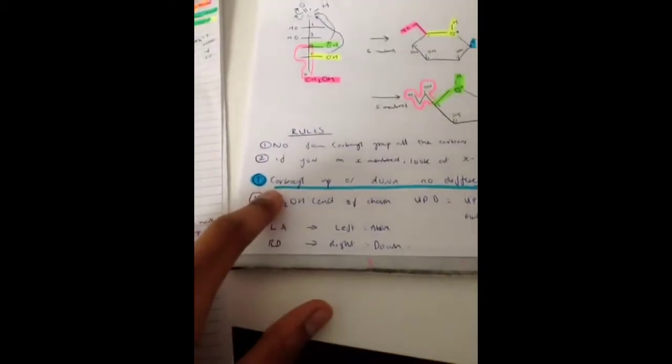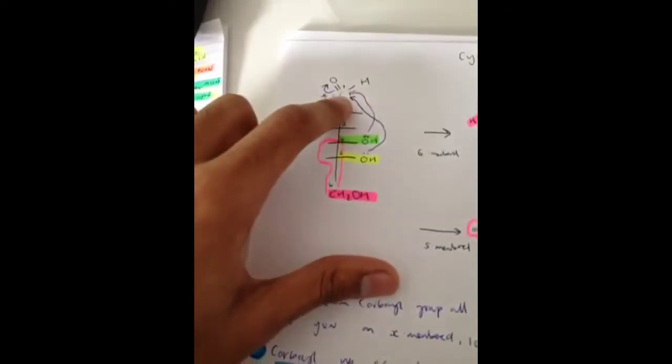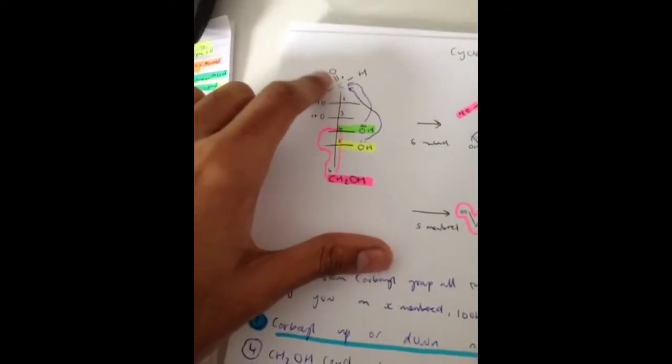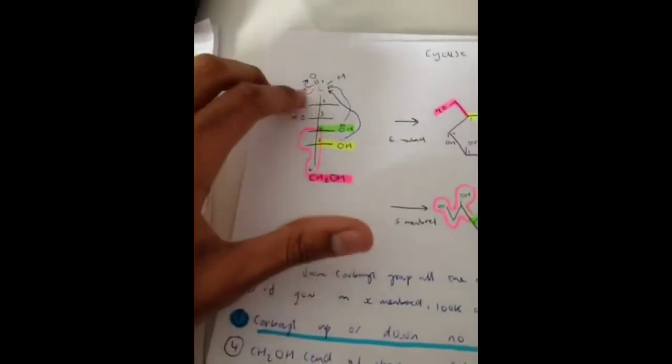The third rule is basically the carbon can be up or down, it makes no difference. So this number 1 carbon, this O- can be up or down. As you can see, when it gains electrons it will become O-, and it's shown here.